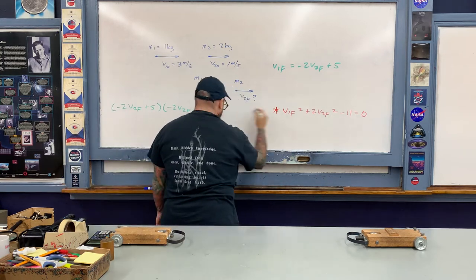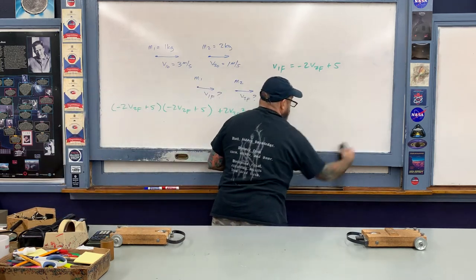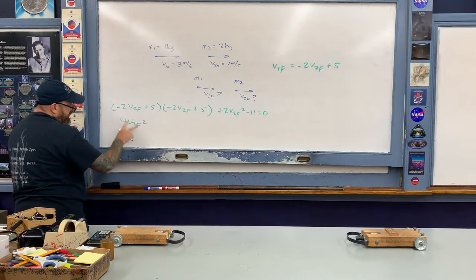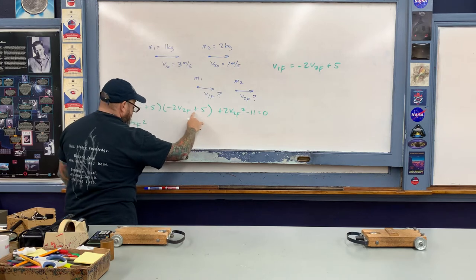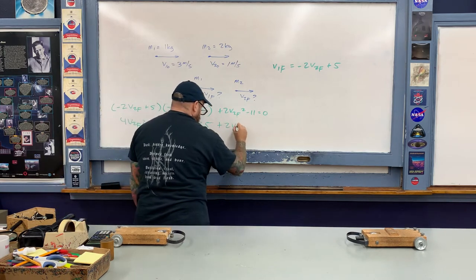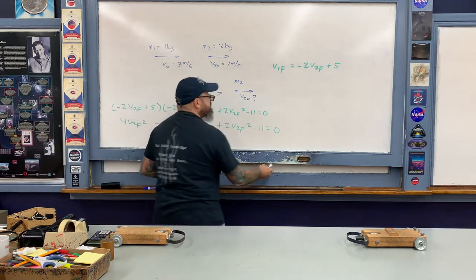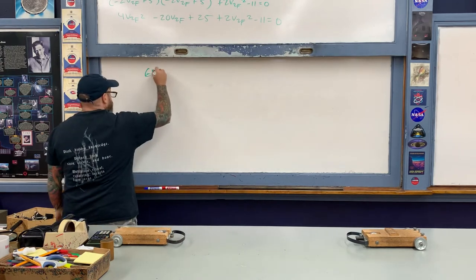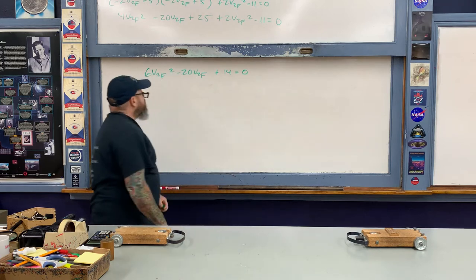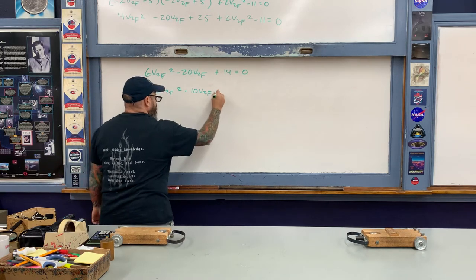After substitution the equation becomes: v1-final squared plus 2·v2-final squared minus 11 equals 0. Foiling out v1-final squared gives: 4·v2-final² minus 20·v2-final plus 25. Combining with the remaining terms yields 6·v2-final² minus 20·v2-final plus 14 equals 0. Dividing every coefficient by 2 simplifies this to: 3·v2-final² minus 10·v2-final plus 7 equals 0.